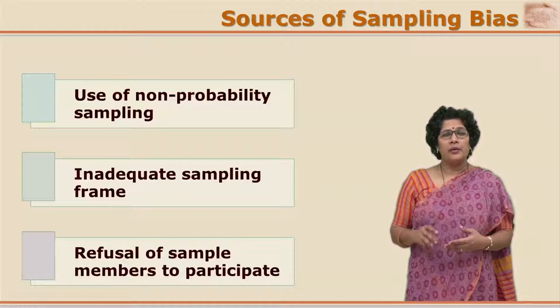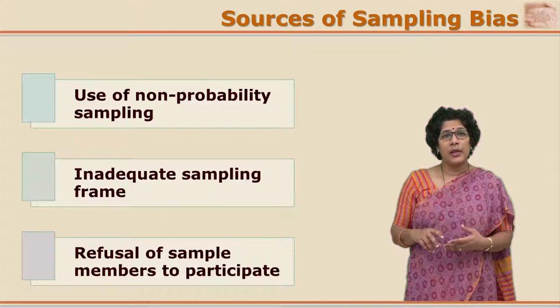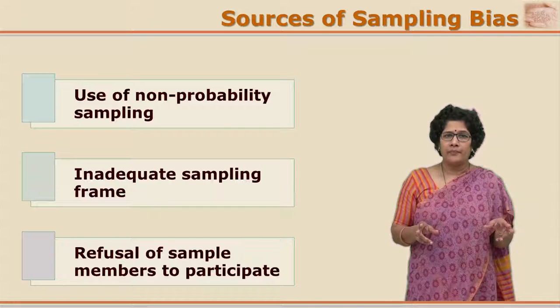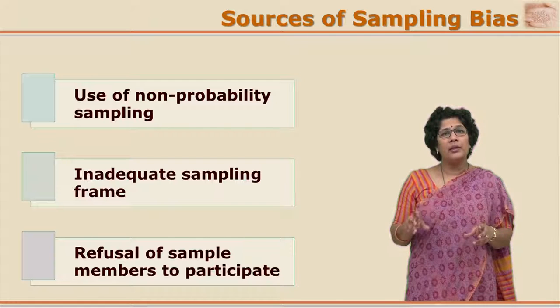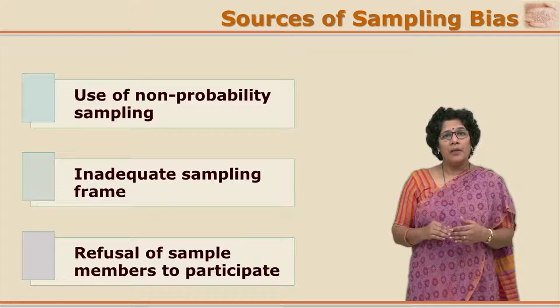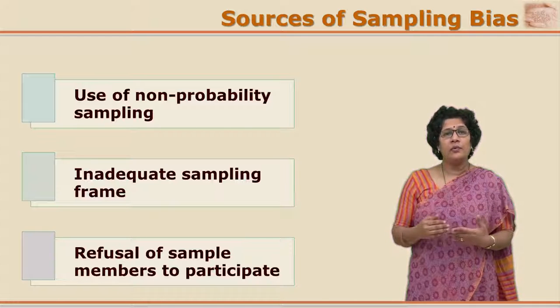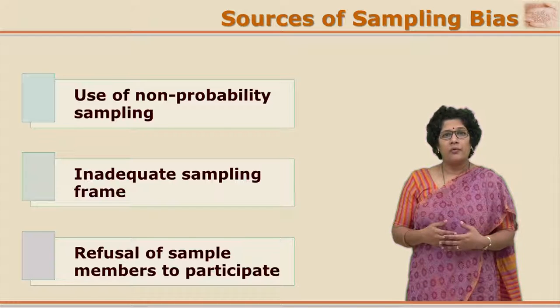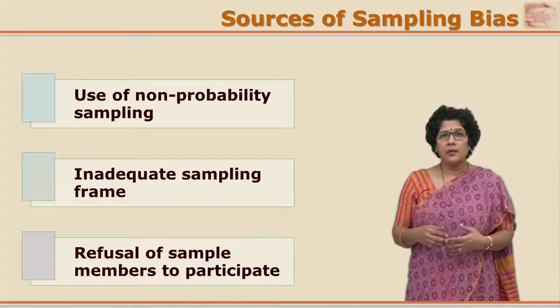There are multiple sources for sampling bias. The first source could be the use of non-probability sampling methods, where the judgment of who should be part of the sample is based on some factor other than randomness. Whenever non-probability sampling methods are used, there will definitely be some sampling bias. The bias may be due to the researcher, due to the situations, or due to the participants' interest and willingness to participate or not.